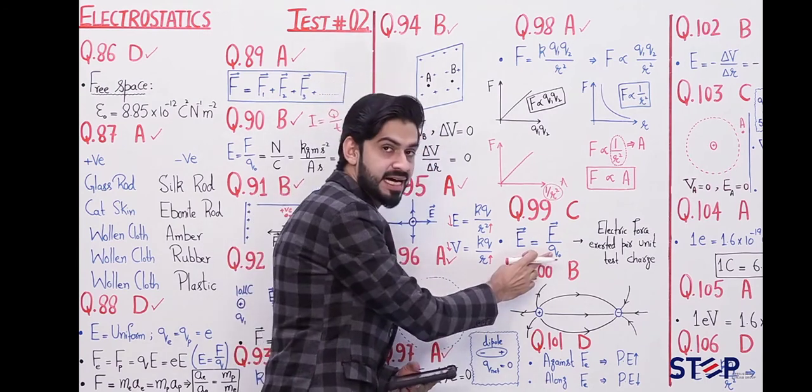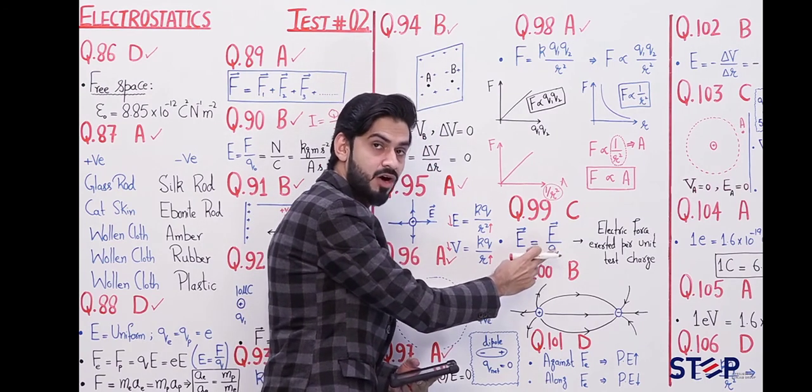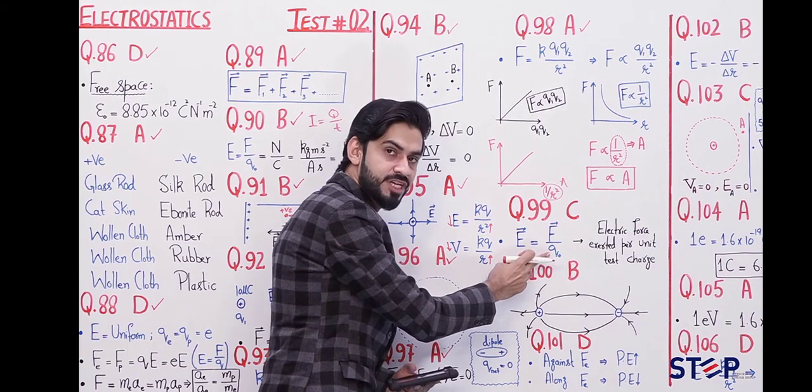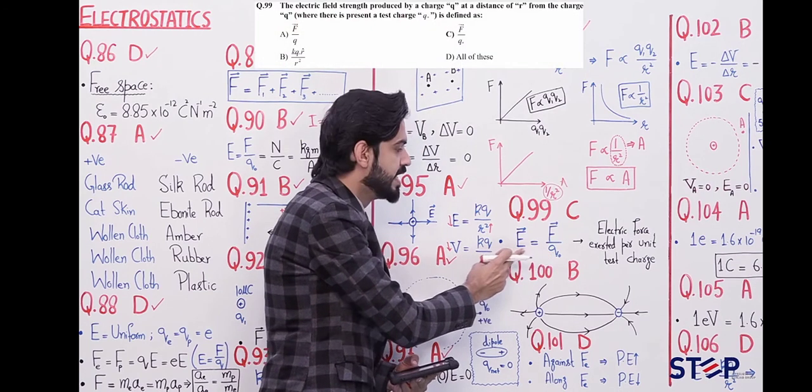This is an important point to remember: q will not come in the denominator. q is the source charge here, and q₀ is the test charge. There will be a test charge in the denominator, which is q₀.